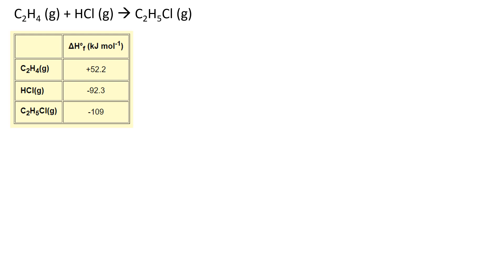Because it's enthalpy of formation, delta HF values, we know it's products minus reactants. If you can't remember that, draw out the Hess cycle and work it out. But it's perfectly acceptable to remember it as products minus reactants. The product is minus 109, and then you're subtracting the reactants, which includes C2H4, which is 52.2. If you check all that into your calculator, you should get minus 68.9 kilojoules per mole, which is exothermic.